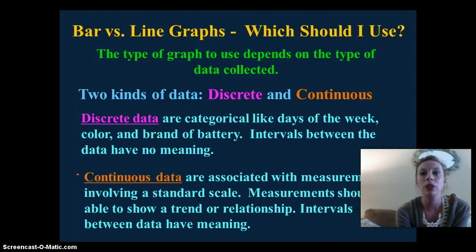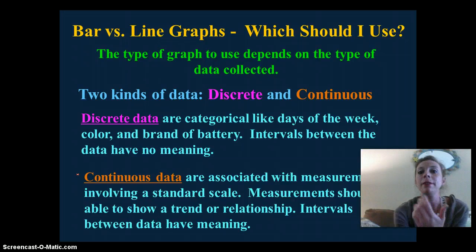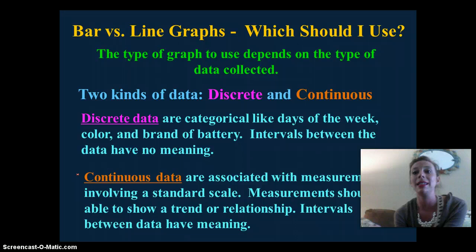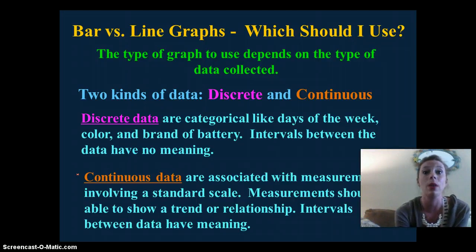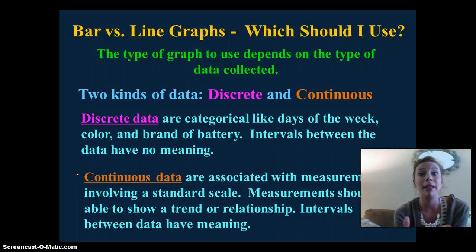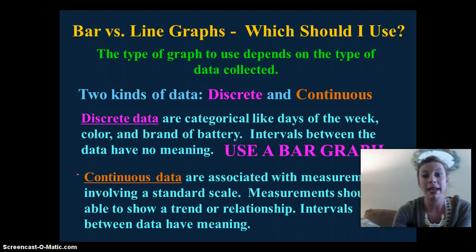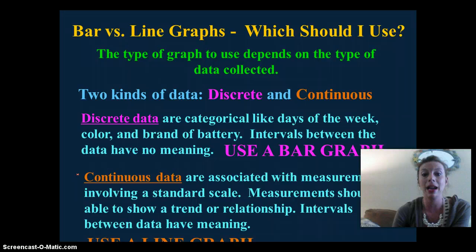And how do you represent your data is by putting them on a graph. And there are different types of graphs. The most common that we use in our class is a bar graph and a line graph. So, there are two types of data. One is discrete data. The second is continuous. Discrete data are typically categorical data. So, it could be like the days of the week, a brand of something, and the intervals between the data have no meaning. So, you could say Monday, Tuesday, Wednesday, Thursday, Friday, or you could say Tuesday, Wednesday, Thursday, Friday, Monday. It doesn't affect the outcome of the experiment. Continuous data are associated with measurements involving a standard scale. So, the measurement should be able to show some sort of trend or relationship, and the intervals have meaning. With discrete data, you're going to use a bar graph. With continuous data, you will use a line graph.